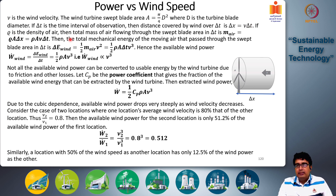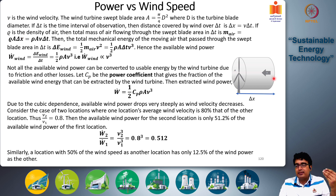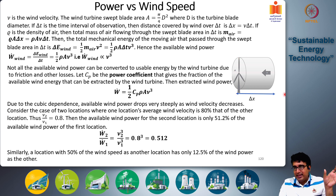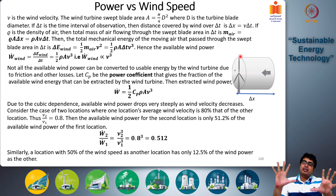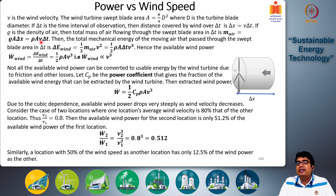If rho is the density of air, then the total mass of air flowing through the swept blade area during time interval Δt is: m_air = ρ × A × Δx = ρ × A × v × Δt, where A is pi over 4 times d squared. This represents the mass of air contained in a cylindrical region of length Δx and diameter d flowing through the turbine blades.